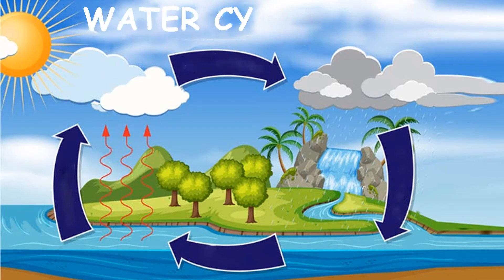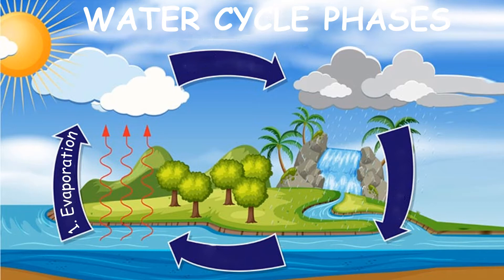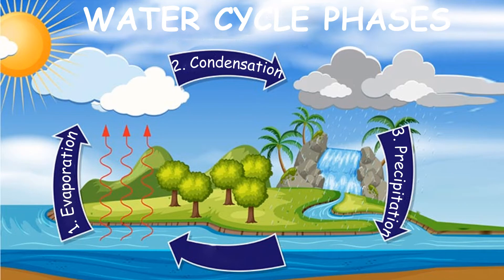The water cycle has four main phases. The first phase is evaporation — when water passes from liquid to gas. The second is condensation, when we form clouds because the water vapor in the atmosphere turns back into liquid. When the clouds are too heavy, it falls down as precipitation, or rain.